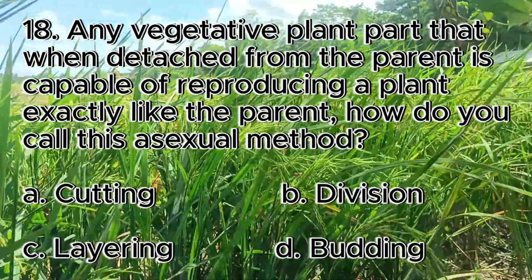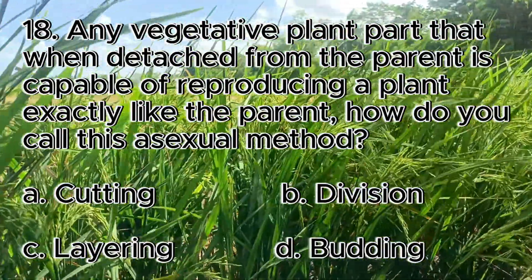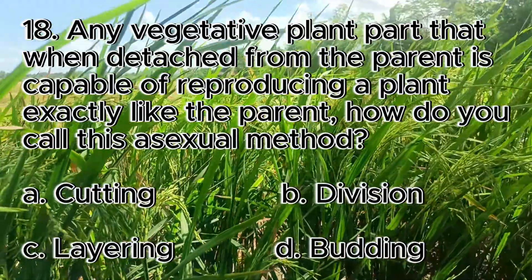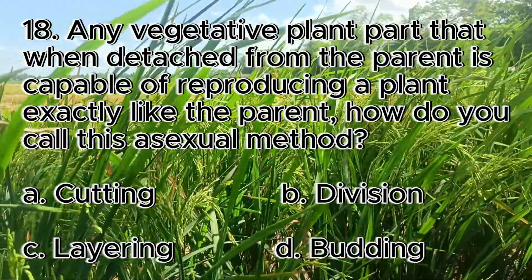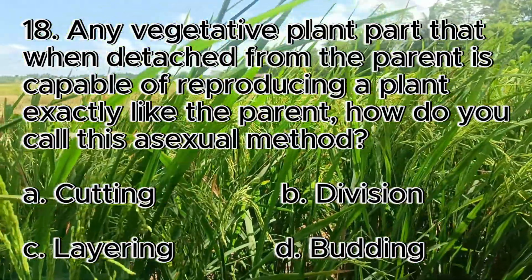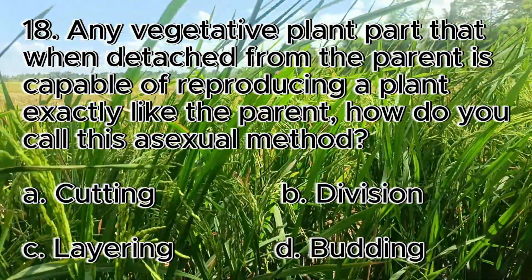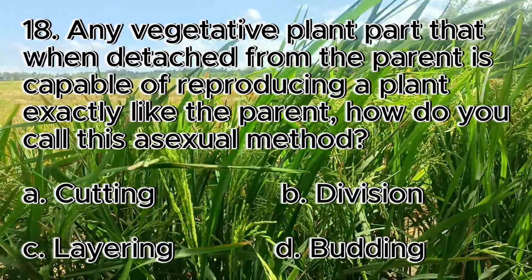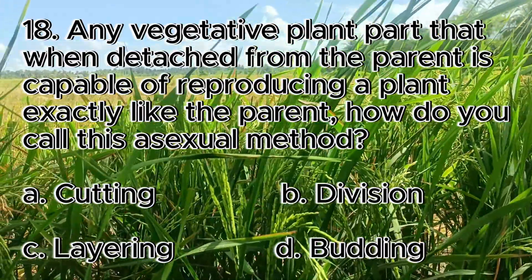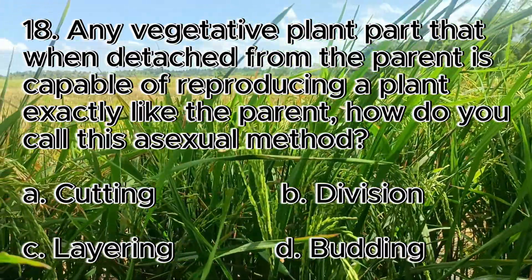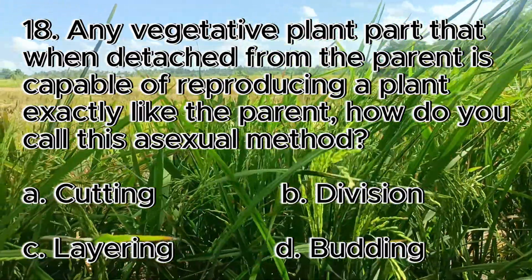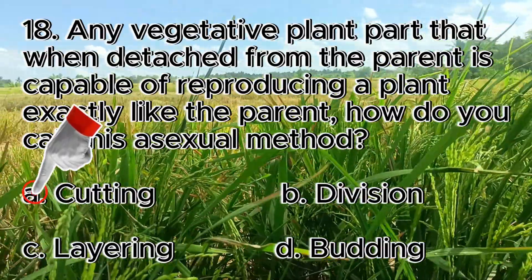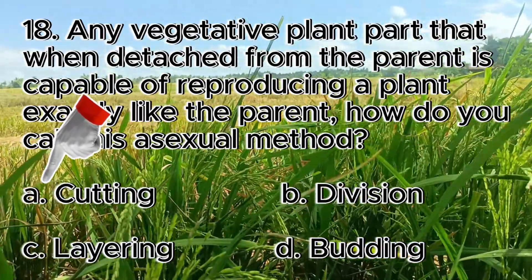Number 18. Any vegetative plant part that when detached from the parent is capable of reproducing a plant exactly like the parent — how do you call this asexual method? A. Cutting, B. Division, C. Layering, D. Budding. The answer is letter A, cutting.